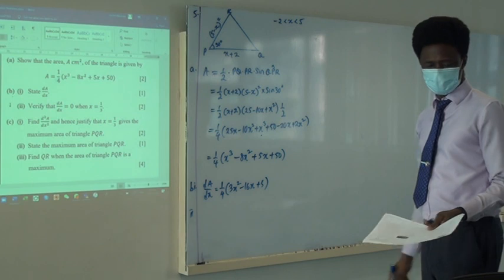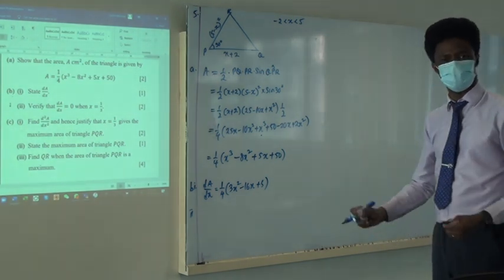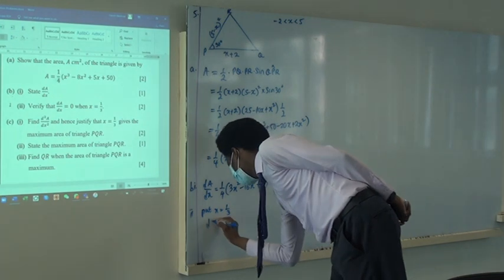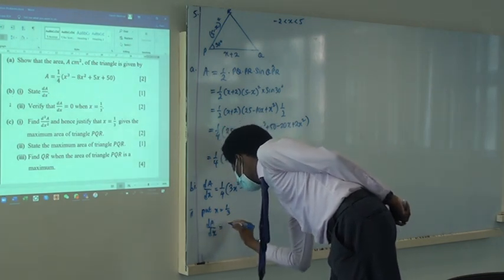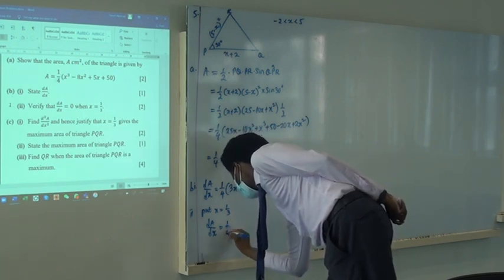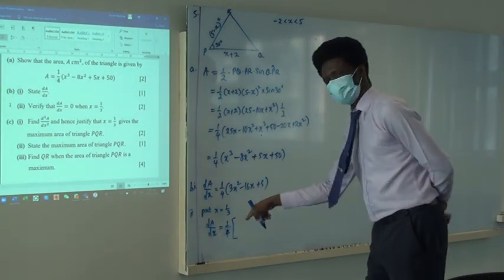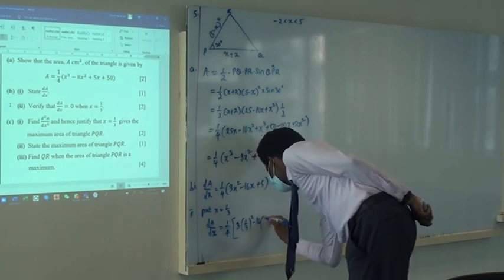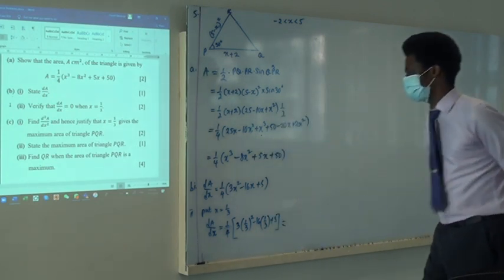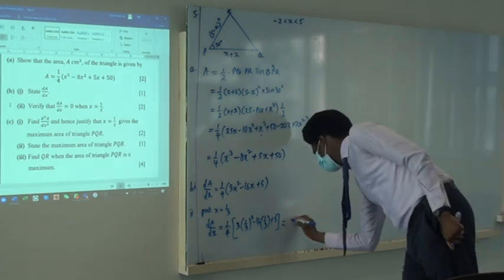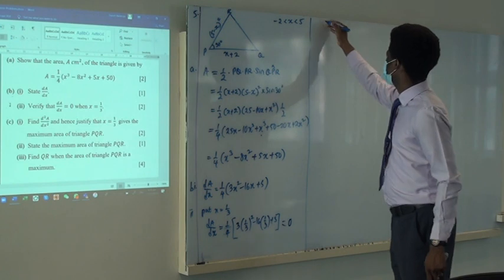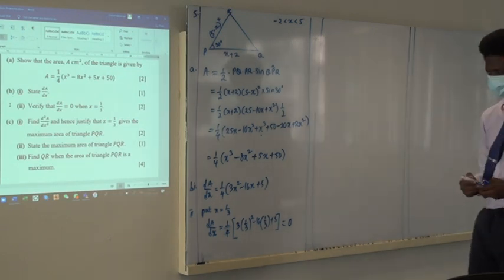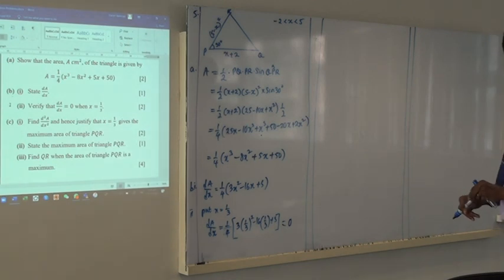The next question says verify that dA/dx is 0 when X is 1 over 3. What do we do? Just substitute. Put X equals 1 over 3 into dA/dx: 1 over 4 times 3 times 1 over 3 squared minus 16 times 1 over 3 plus 5. Let's put this in the calculator and see if we get 0. We get 0? Yes. Great.